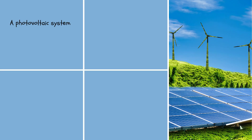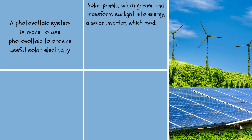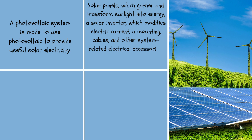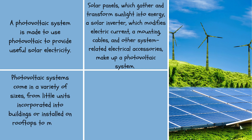A photovoltaic system is made to use photovoltaics to provide useful solar electricity. Solar panels, which gather and transform sunlight into energy, a solar inverter, which modifies electric current, a mounting, cables, and other system-related electrical accessories make up a photovoltaic system. Photovoltaic systems come in a variety of sizes, from little units incorporated into buildings or installed on rooftops to massive power plants.